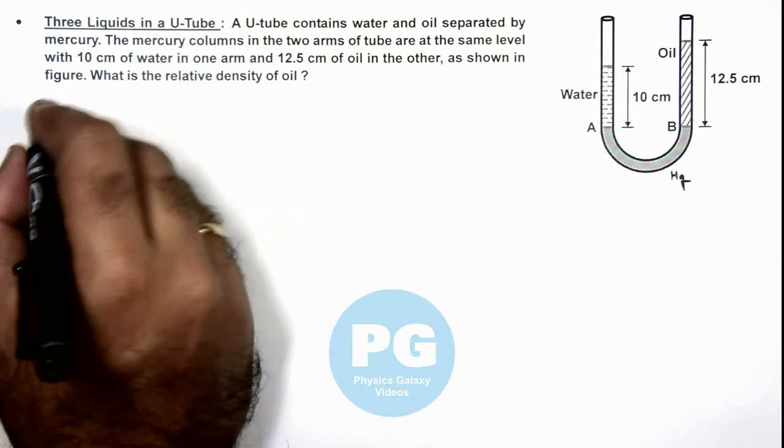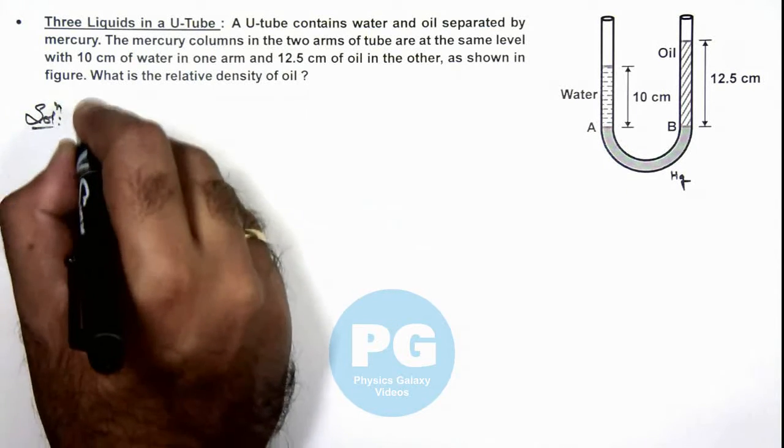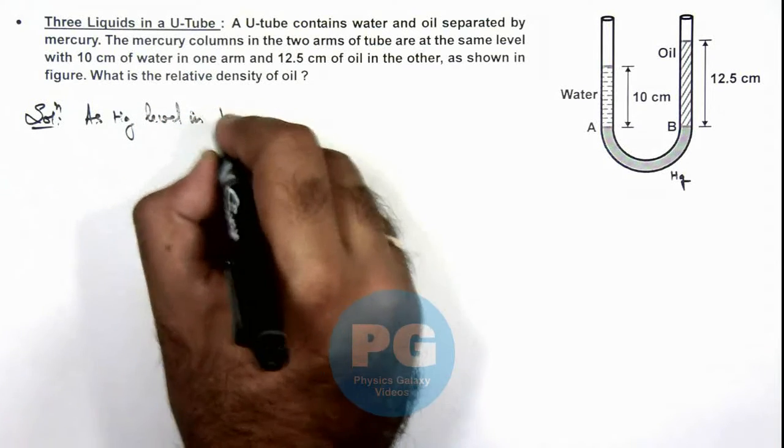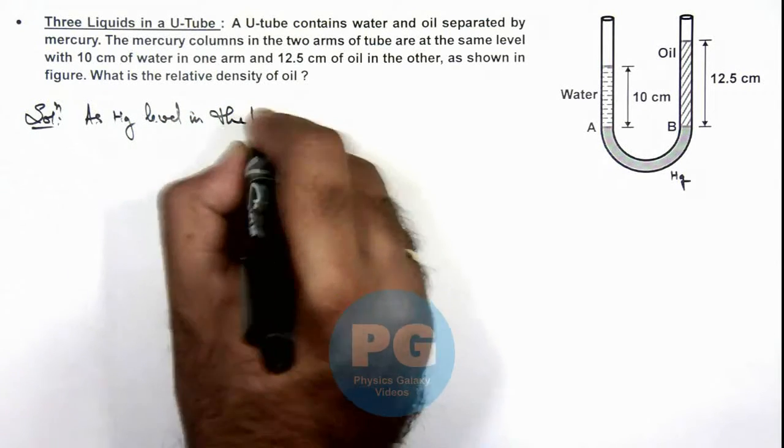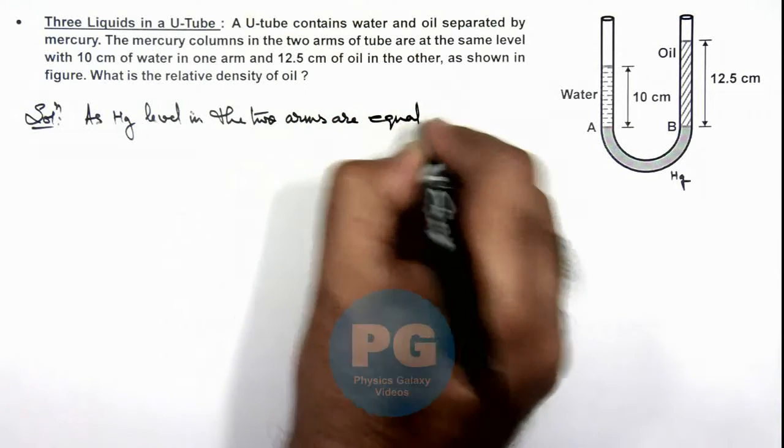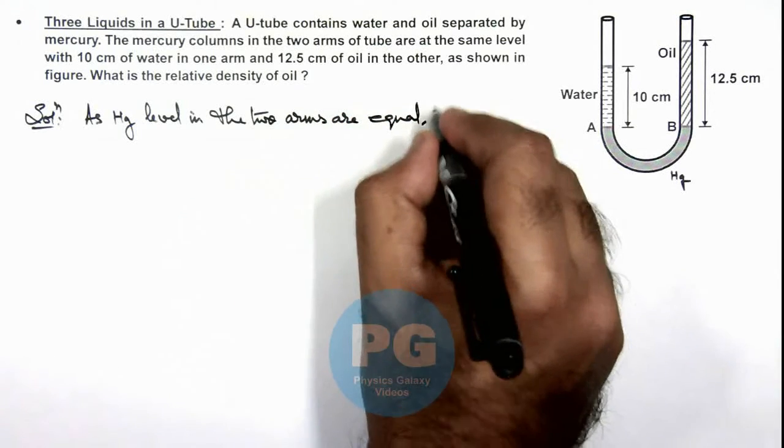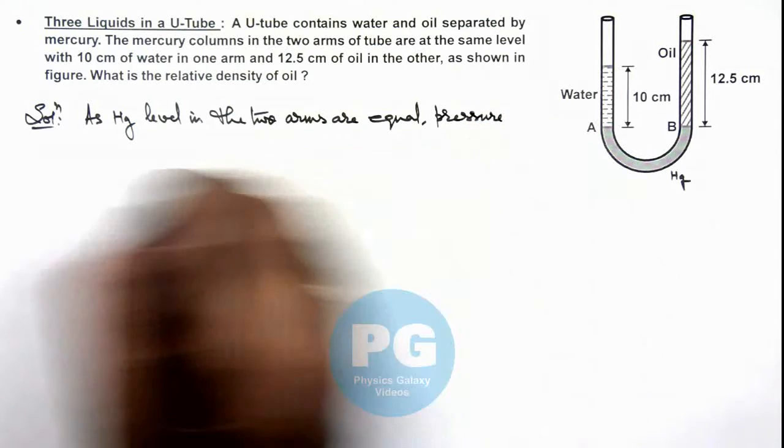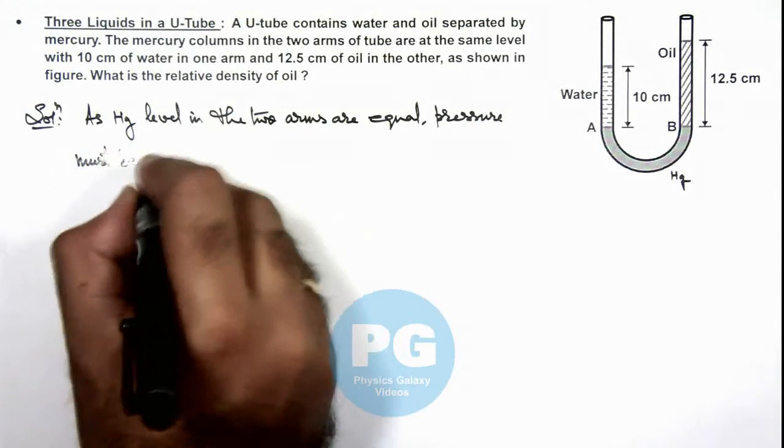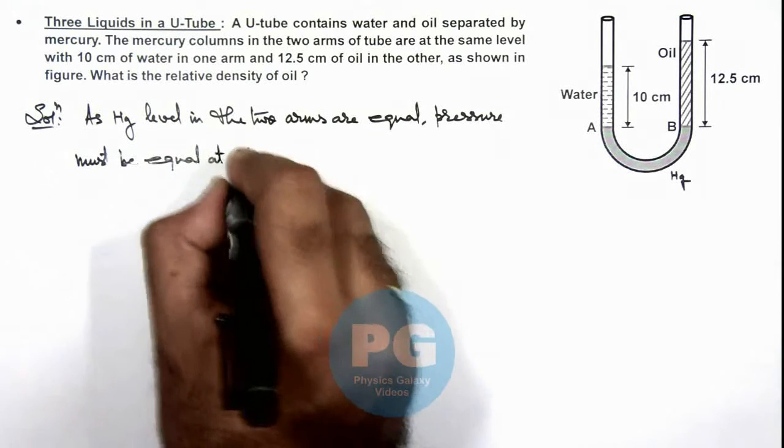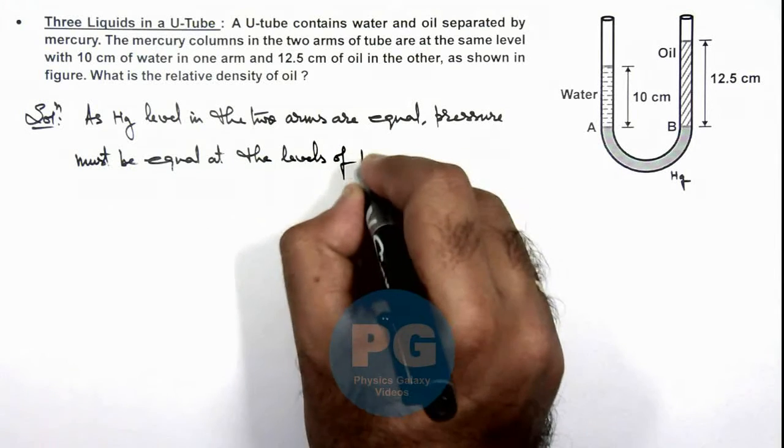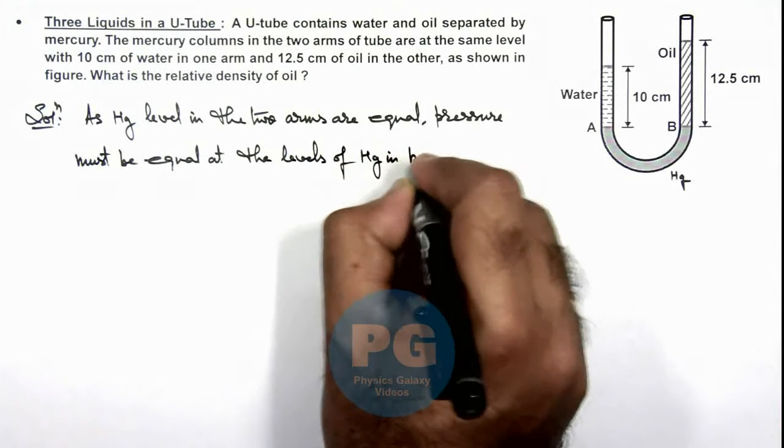Here, we can write, as mercury level in the 2 arms are equal, pressure must be equal at the levels of mercury in both arms.